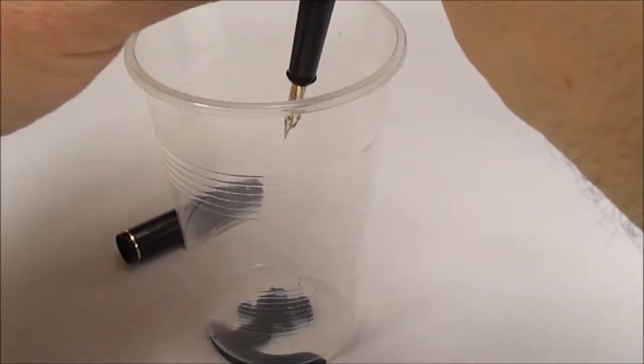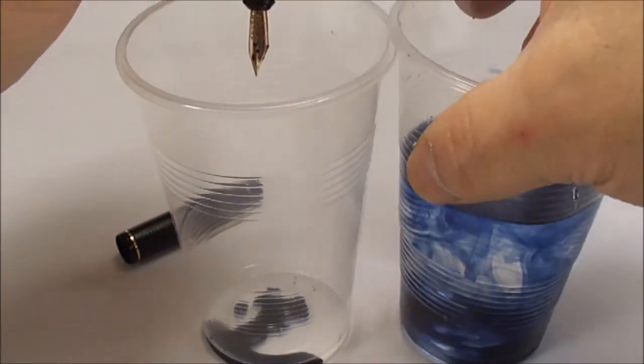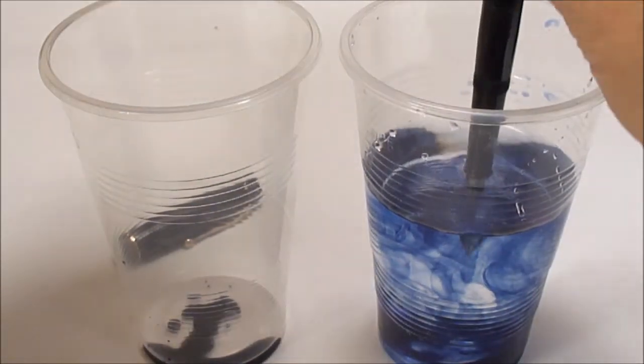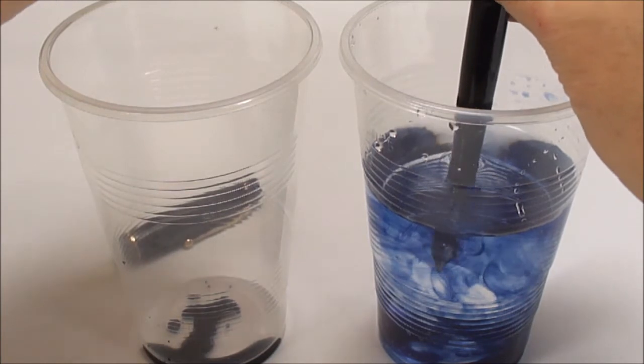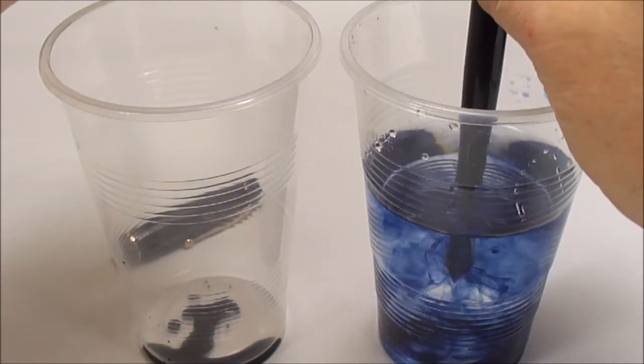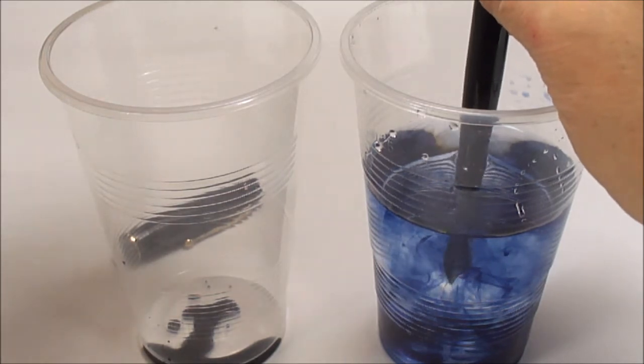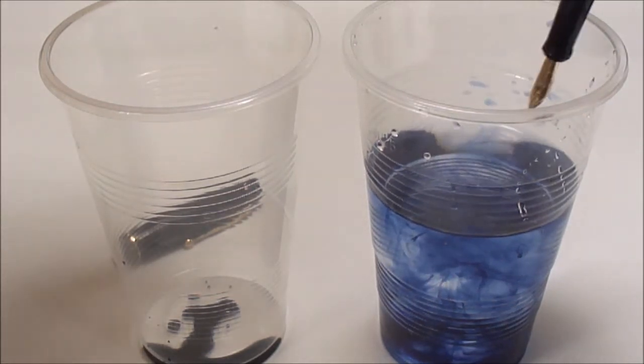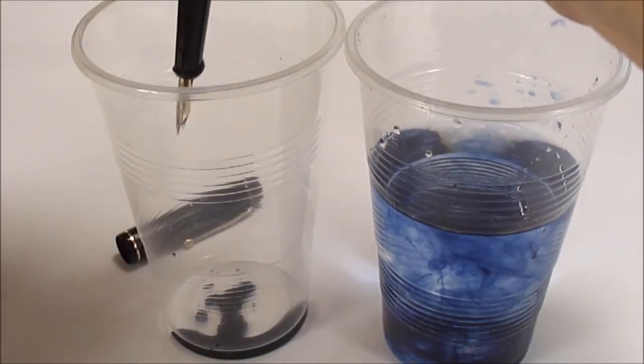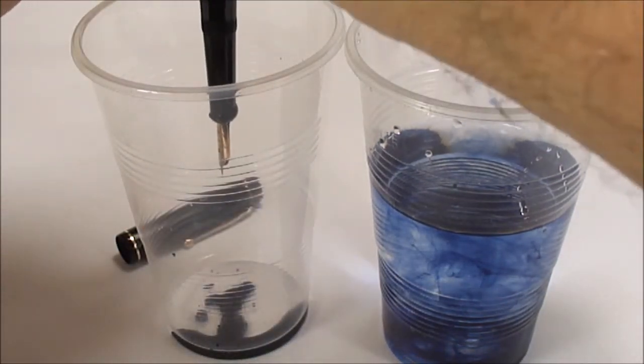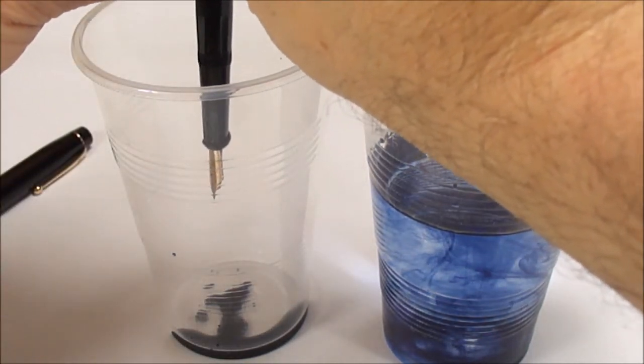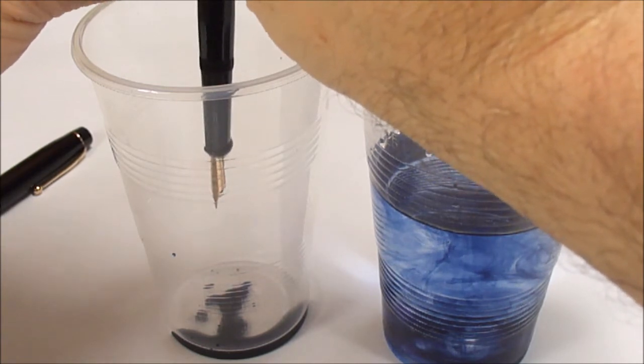Let's do that one more time. Immerse it in the ink or the water. Again, you could hear and actually see all the bubbling going on. If we transfer that over to the other cup, plunger out, and then press down again, you'll see the water or the ink coming out of the nib.